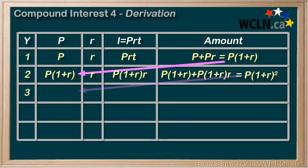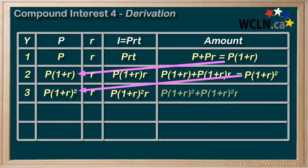Year 3, let's carry our P times 1 plus R squared down to the third year. Same interest rate, so now we take our new principle and times it by R for our interest, and then we add it to our previous amount.